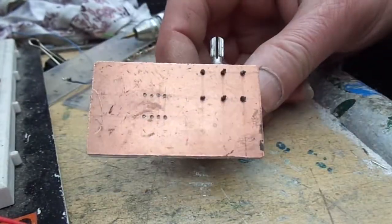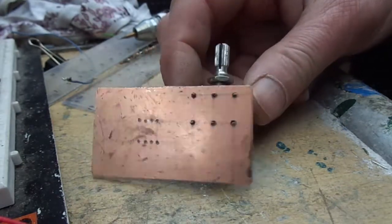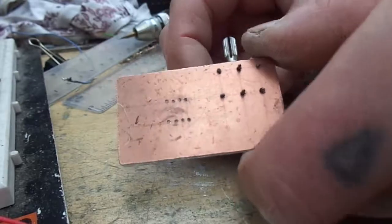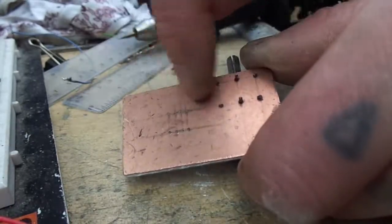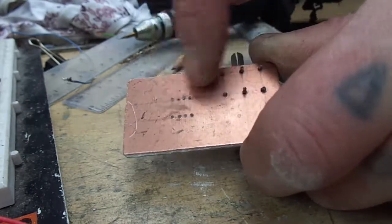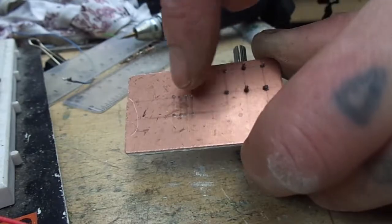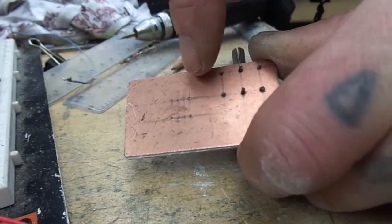So that's our pot mounted on there. And then the next step is to, I'm going to clean this up with a bit of sandpaper, bit of wet and dry, very fine grit. Clean this up so we can see the traces better. And then next thing to do is to trace out where all our traces are going to go.